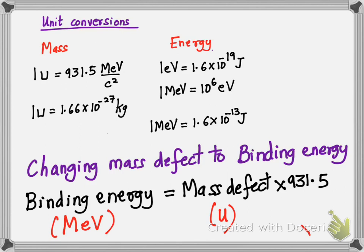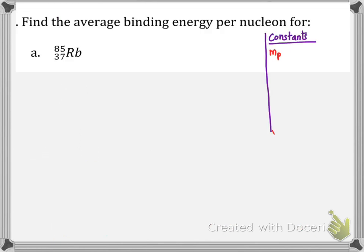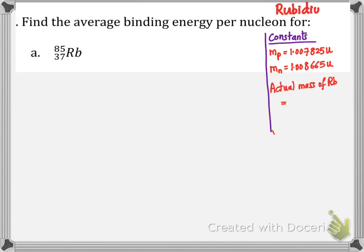You must be careful about units when using this relation. Let's solve a problem: finding the average binding energy per nucleon for rubidium (Rb), which has atomic number 37 and mass number 85. Constants provided include the mass of a proton (mp), the mass of a neutron (mn), and the actual mass of rubidium.